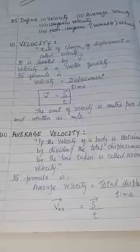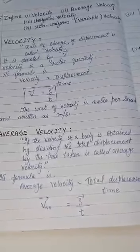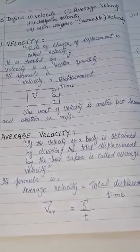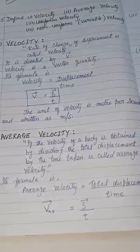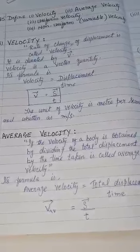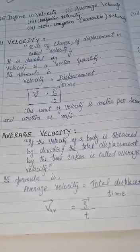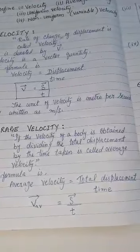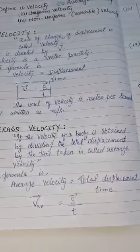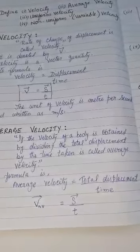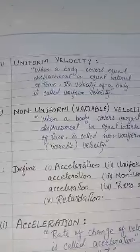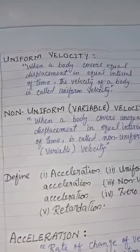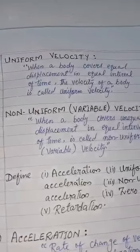Number 2: Average velocity. If the velocity of a body is obtained by dividing the total displacement by the time taken, it is called average velocity. Its formula is: average velocity = total displacement / time, i.e., v_avg = s / t.